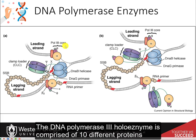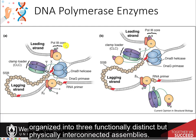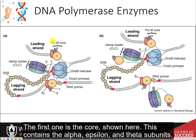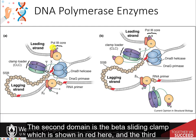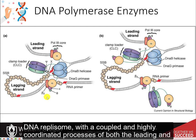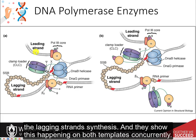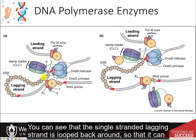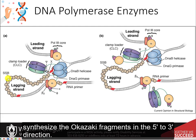The DNA polymerase 3 holoenzyme is comprised of 10 different proteins organized into three functionally distinct but physically interconnected assemblies. The first is the core, which contains the alpha, epsilon, and theta subunits. The second domain is the beta sliding clamp, shown in red. The third complex is the clamp loader complex. Figure A shows a standard textbook diagram of the DNA replisome with the coupled and highly coordinated processes of both the leading and lagging strand synthesis happening on both templates concurrently. The single-stranded lagging strand is looped back around so that it can synthesize the Okazaki fragments in the 5' to 3' direction.